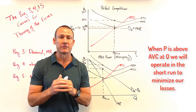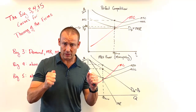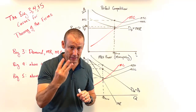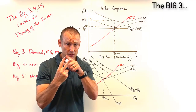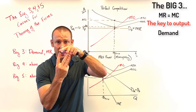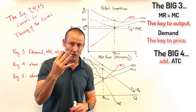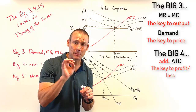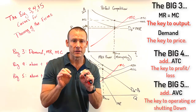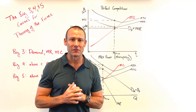Let me recap. Watch this video twice — it's the foundational video. Theory of the firm, product market — about 80% of the focus. Big three: Demand, MR, MC. Demand gives you MR; MR = MC is key to output; demand curve is key to price. Big four adds ATC — needed for profit and loss questions. Big five adds AVC — only needed if the firm is making losses and you need to determine shut down versus operate in the short run. Hope that helps — see you next time.